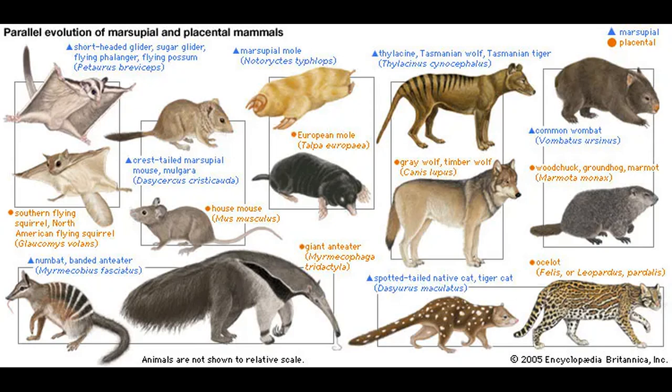Hello everyone. Today we're continuing our deep dive of Richard Dawkins and Yan Wong's book, The Ancestor's Tale. In this episode we're going to discuss convergent evolution between placental and marsupial mammals. So let's jump right in.